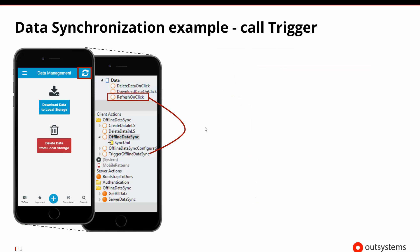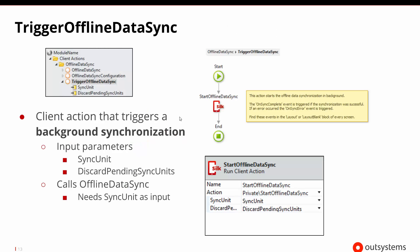Once we've configured automatic synchronizations, what happens if we wish to initiate a synchronization ourselves? Maybe we're using an app with a refresh button and we ask it to sync the data. We could create a client action called refresh on click that starts the synchronization. All we'd have to do in that action is drag and drop the trigger offline data sync client action to kick that off.